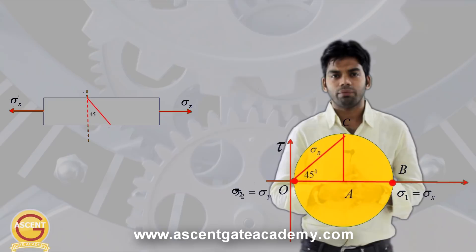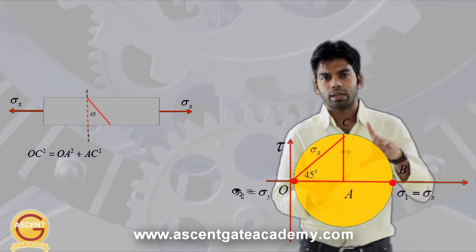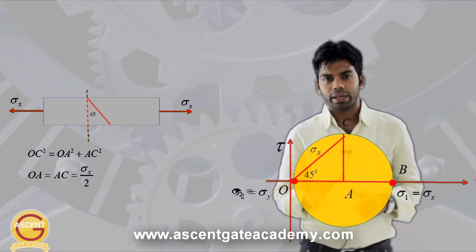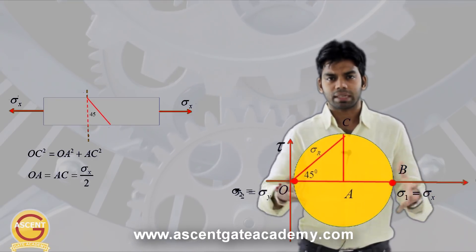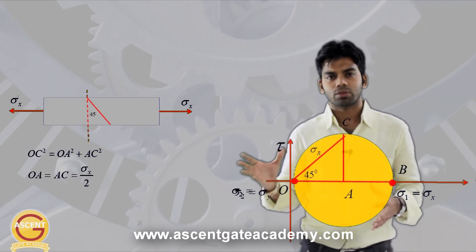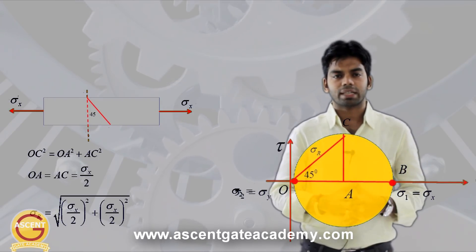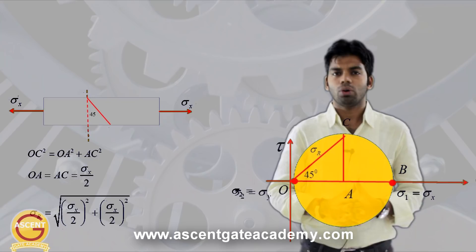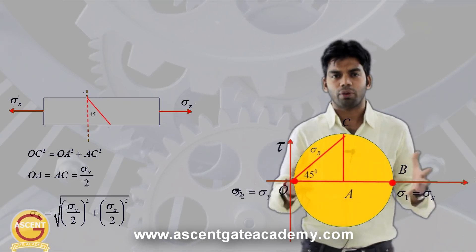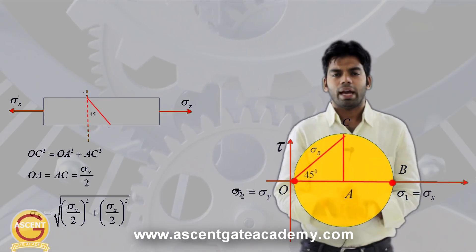From the Pythagoras theorem, OC² = OA² + AC², where OA and AC are both equal to the radius of the circle, which is sigma_x/2. So the resultant stress equals the square root of (sigma_x/2)² + (sigma_x/2)². This is a simple process that requires barely any pen-and-paper work — you can visualize it in your mind and solve the question within seconds.